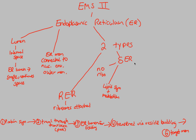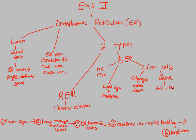Liver cells have an abundance of smooth ER. Liver cells are responsible for breaking down glycogen and, more importantly, for detoxifying the body. The smooth ER in liver cells adds a hydroxyl group (–OH) to harmful compounds to increase their solubility. That hydroxyl group increases solubility because oxygen is electronegative, making the molecule polar.